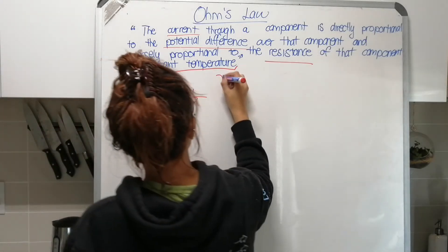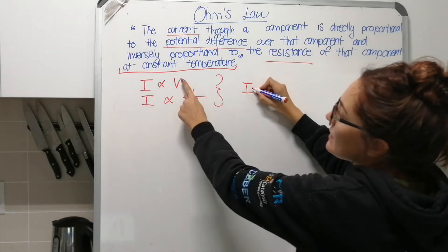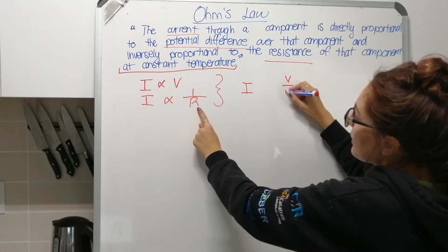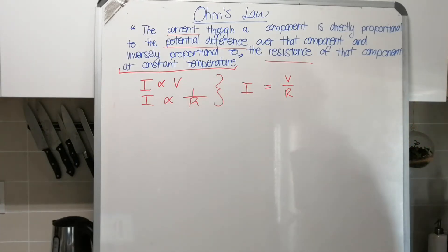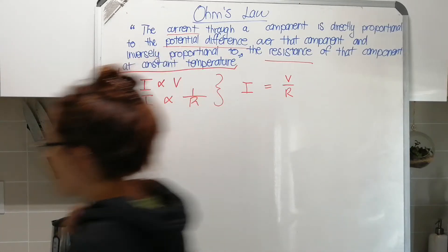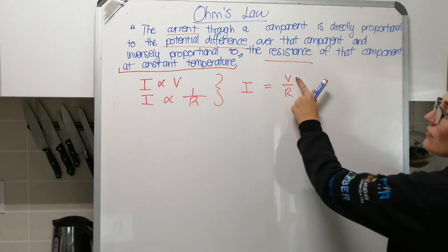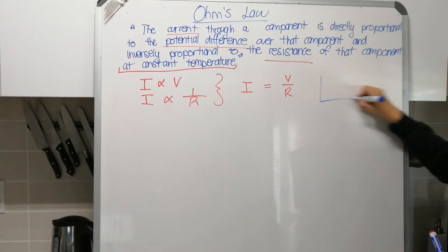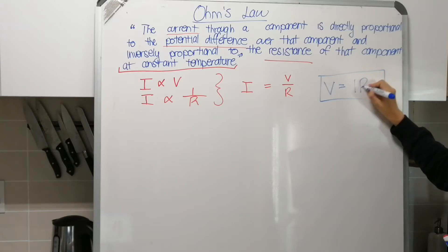We can take all of this information and turn it into one equation. We can say that current and potential difference at the top and resistance at the bottom have a mathematical relationship. Current is equal to potential difference over resistance. Ohm's Law, however, on your formula sheet is given to you rearranged - the V is isolated, so they multiply the R across, and this is how Ohm's Law will look on your formula sheet: V equals IR.